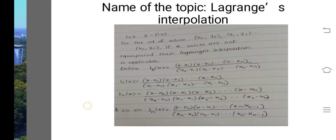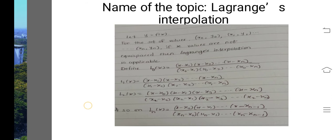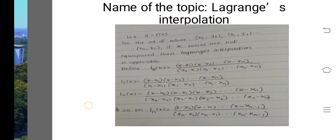For Ln(x), we do not include the term (x − xn) in the numerator. So Ln(x) equals (x − x0)(x − x1)(x − x2)···(x − xn−1), and the denominator is (xn − x0)(xn − x1)(xn − x2)···(xn − xn−1).